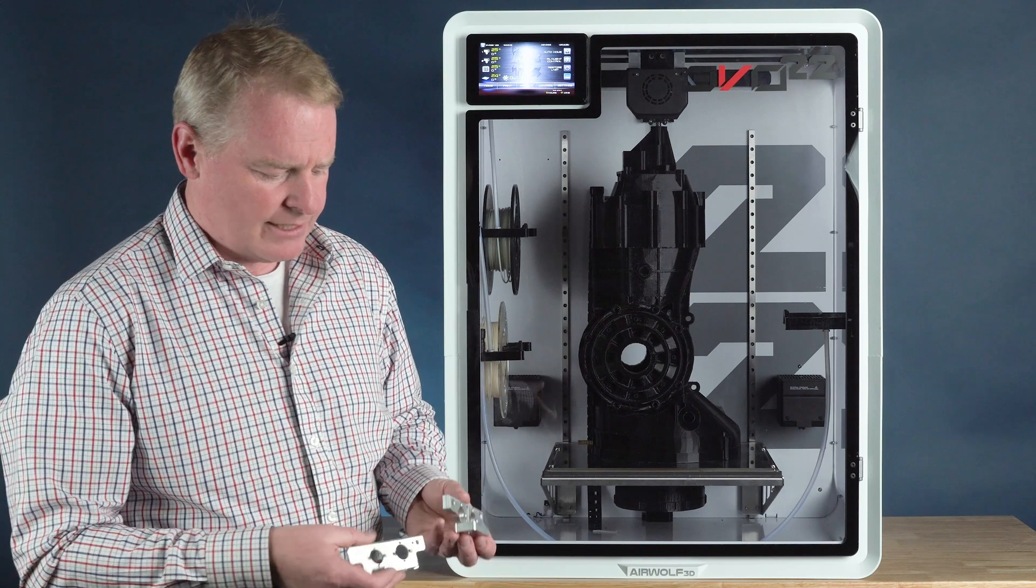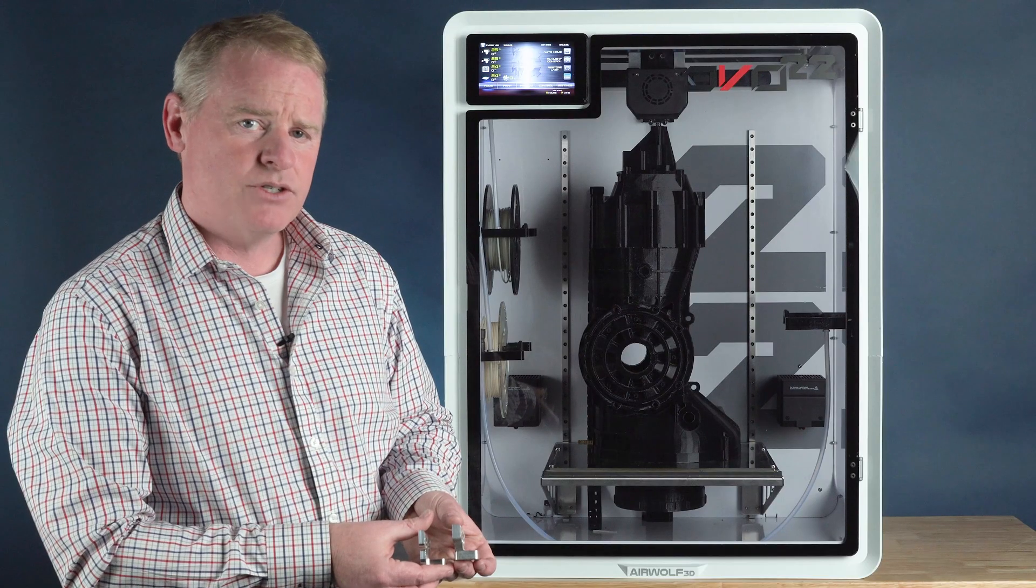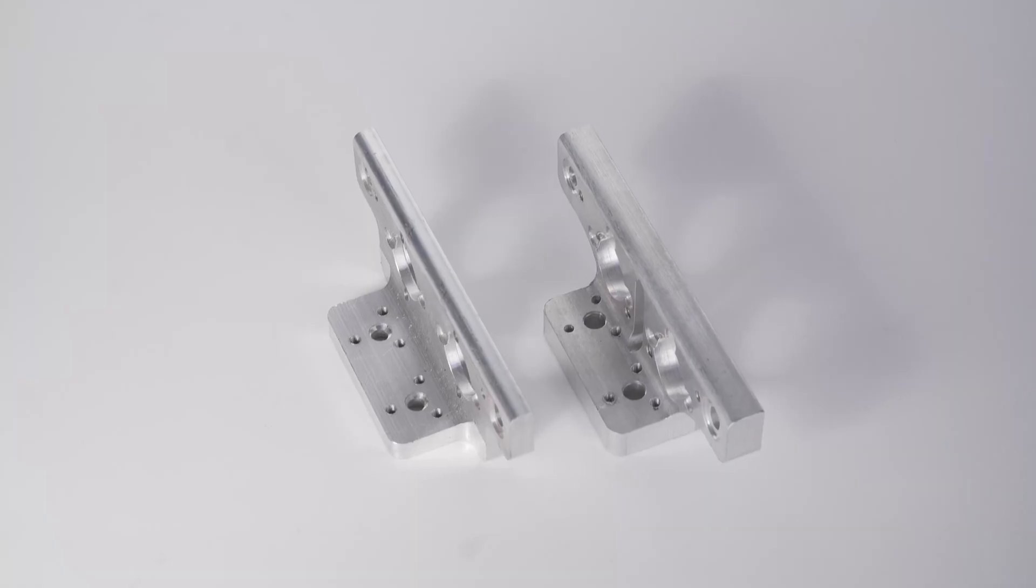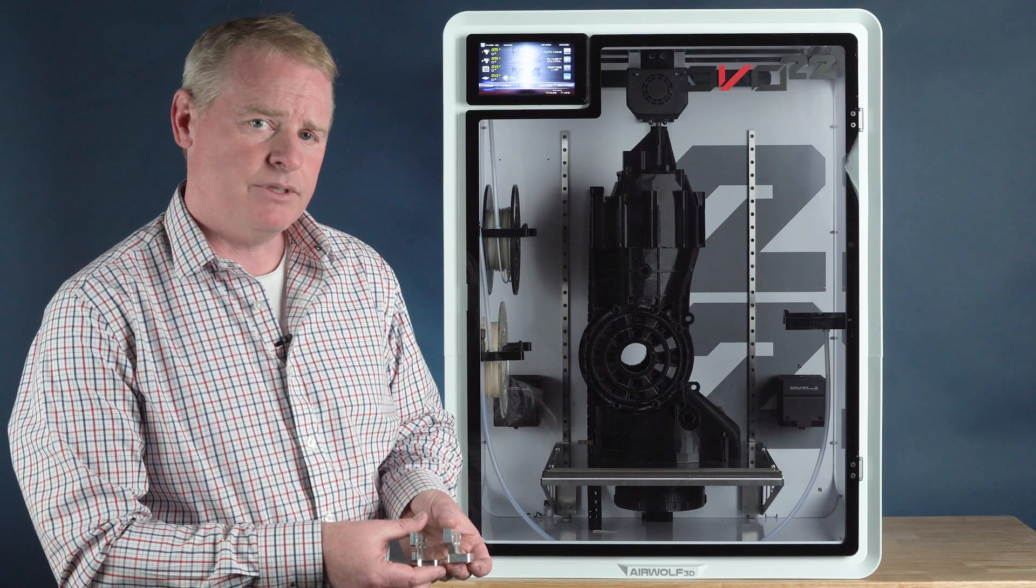Now the three-eighths inch you can see a side-by-side comparison gives us substantial rigidity increase over the original quarter inch brackets which helps printing precision and auto leveling precision.